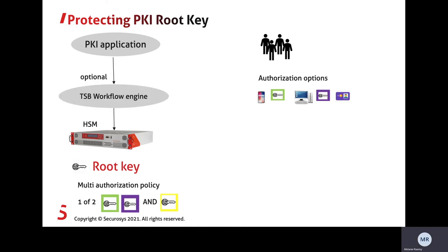We have also optionally created a workflow engine, because in real life you don't want to collect all authorizations at the same time. For example, in the eIDAS use case where you need three board members, you won't get all approvals simultaneously — one person approves today, another tomorrow. The TSP workflow engine collects all these authorizations. It's optional; you could also collect them yourself using the Java API, but the TSP makes integration easier and has a REST API.